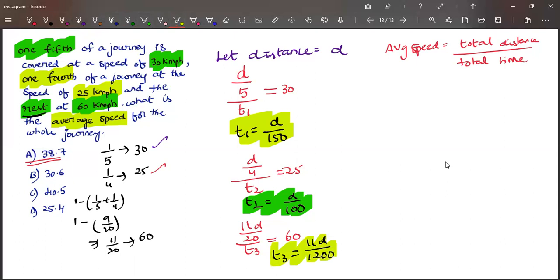Now we have our distance and we have our times t1, t2, and t3. So now let us find average speed. Average speed equals total distance D by t1 plus t2 plus t3. So D by t1 means D by 150, t2 means D by 100, t3 is D by 1200.